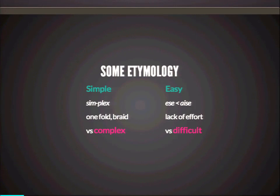When we say one fold or braid, sometimes people picture something which is like folded once. What this is really expressing is the unarity of the thing — so it's unfolded. Think about duplex apartments: that means they have two levels. So simplex is one.